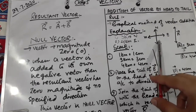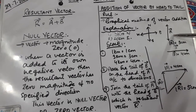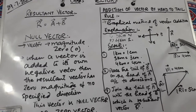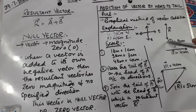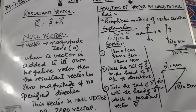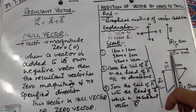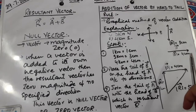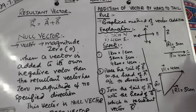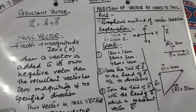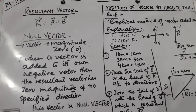We mark north, south, west, and east directions. The first vector A is 3 km towards north, so we draw it towards north with a magnitude of 3 cm. The second vector B is 4 km towards east, so we draw it 4 cm towards east.